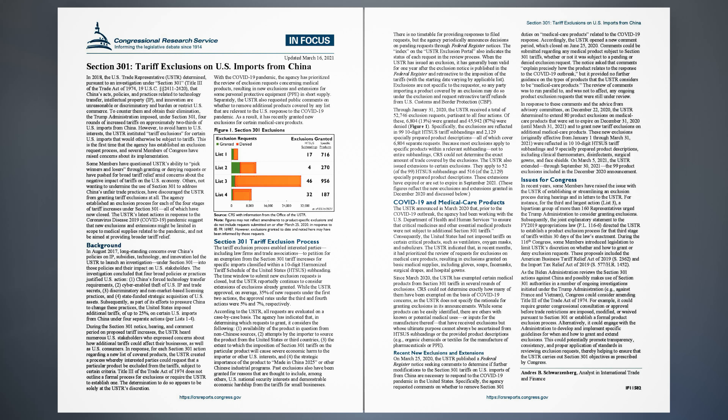To counter them and obtain their elimination, the Trump administration imposed, under Section 301, four rounds of increased tariffs on approximately two-thirds of U.S. imports from China. However, to avoid harm to U.S. interests, the USTR instituted tariff exclusions for certain U.S. imports that would otherwise be subject to tariffs.